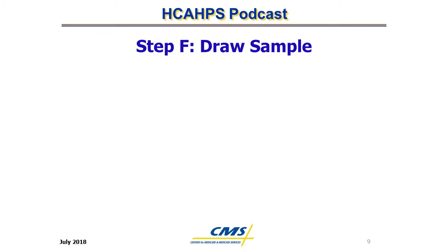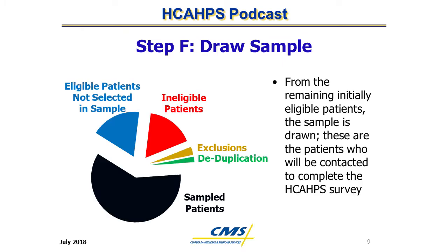Step F: Draw a sample. After determining the sample frame, a random sample is drawn using one of the three methods described in the H-CAPS Quality Assurance Guidelines, Sampling Protocol Chapter. The random sample is represented by the black slice of the circle, while the blue slice represents eligible patients not drawn into the sample.